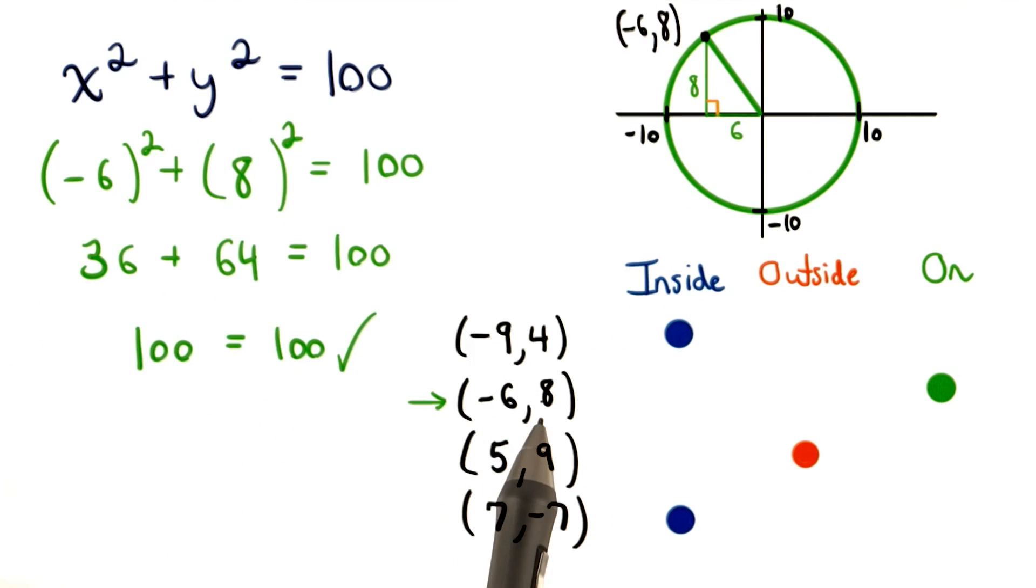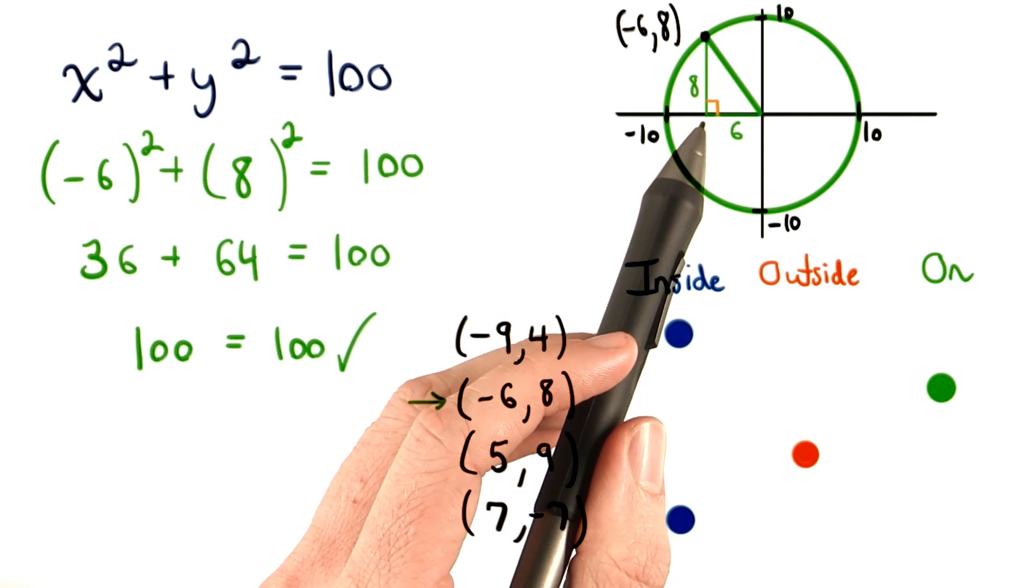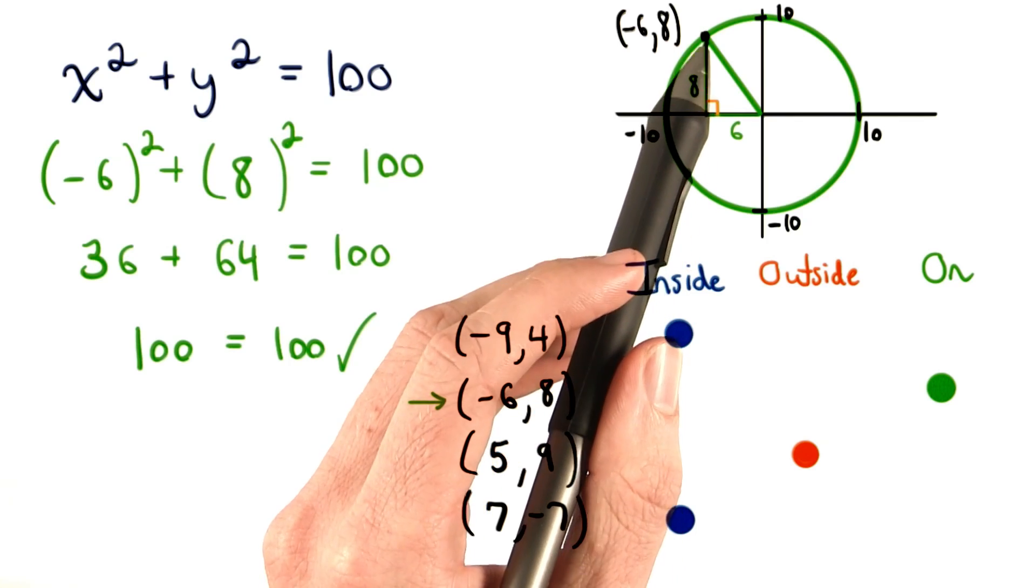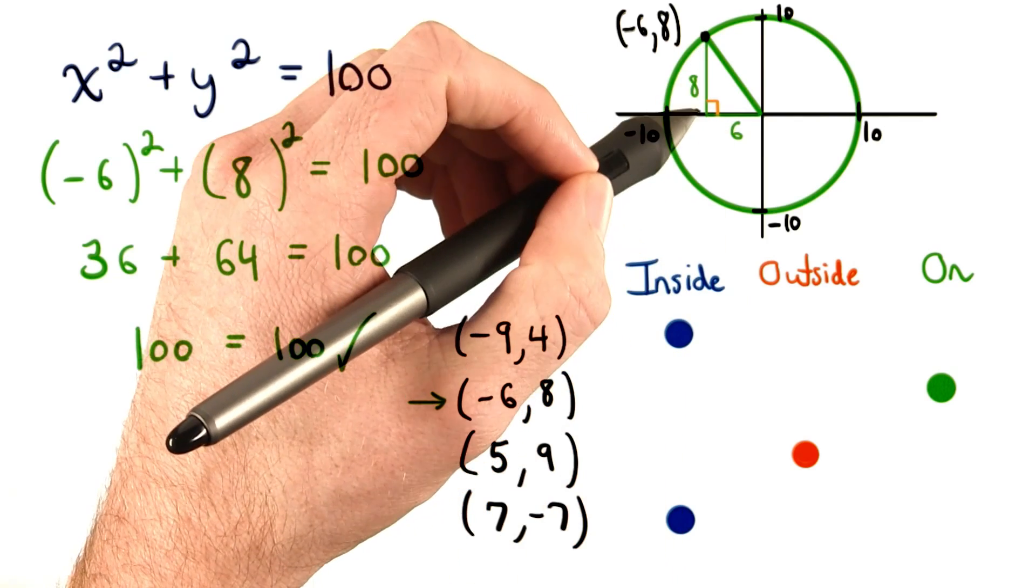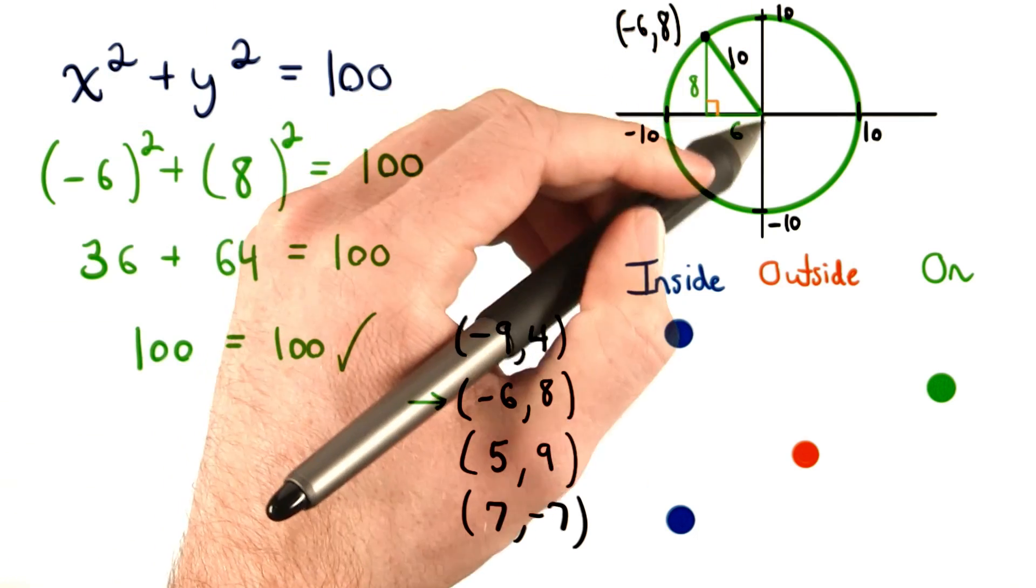We also know that this point is on our circle since we can set up a right triangle. The point (-6, 8) is 6 units left from the origin and 8 units up. If we use the Pythagorean theorem here, we'll discover that this side, or this radius, is 10.